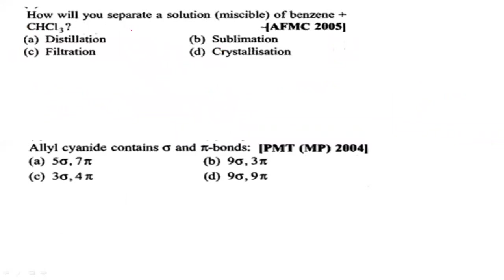How will you separate a solution of benzene and chloroform? To separate benzene and chloroform, option A — distillation method — is correct.